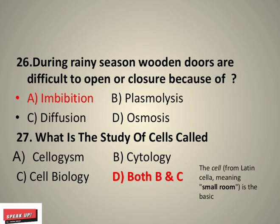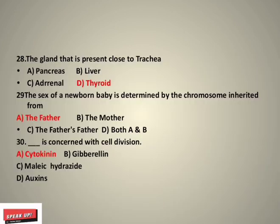What is the study of cells called? Both cytology and cell biology are correct. The cell — from the Latin word 'cyla' meaning small room — is the basic unit of life. The gland present close to the trachea is the thyroid gland.